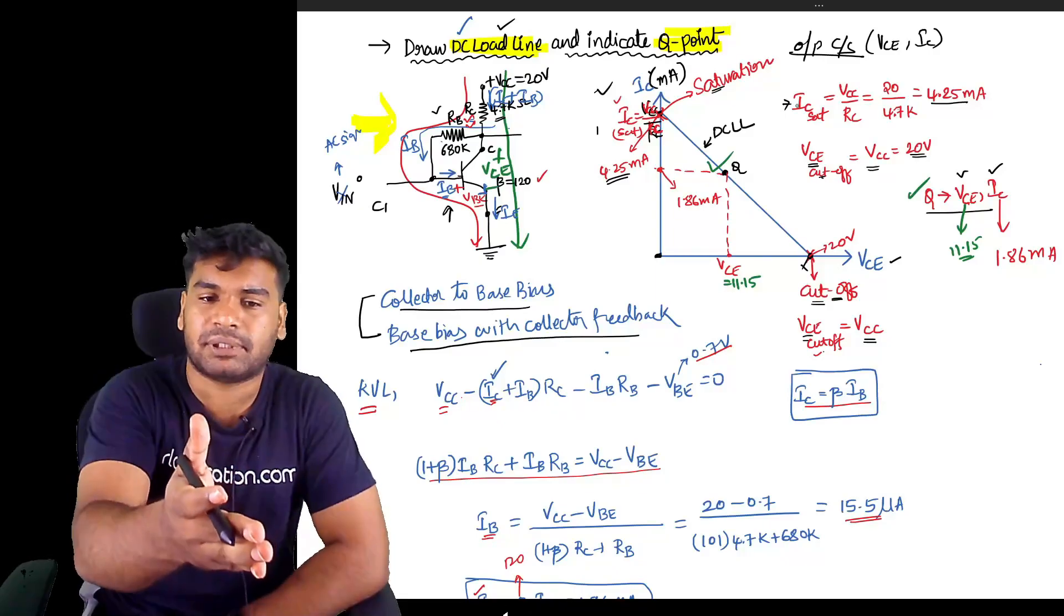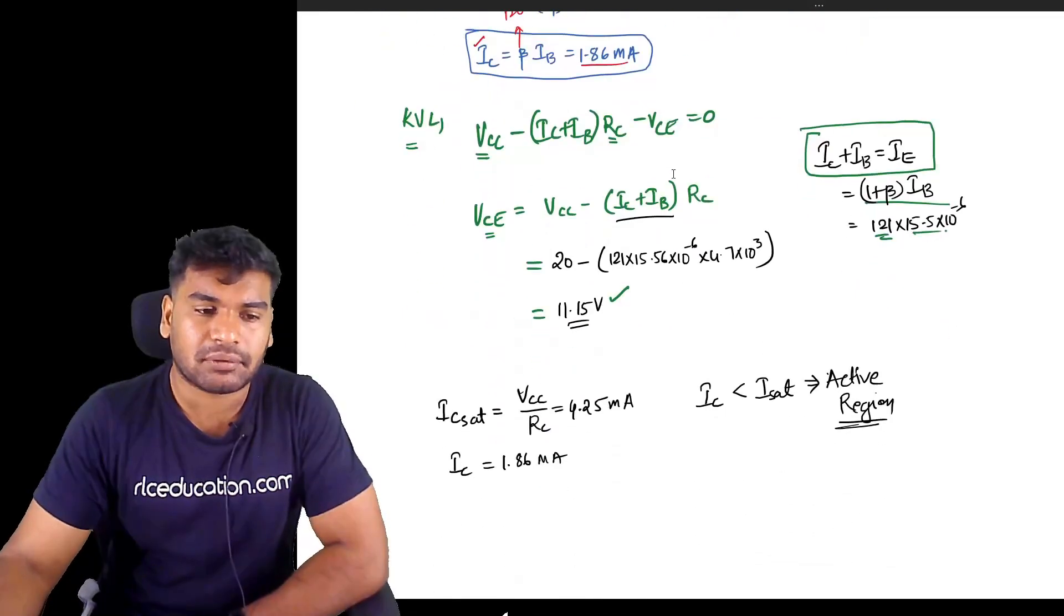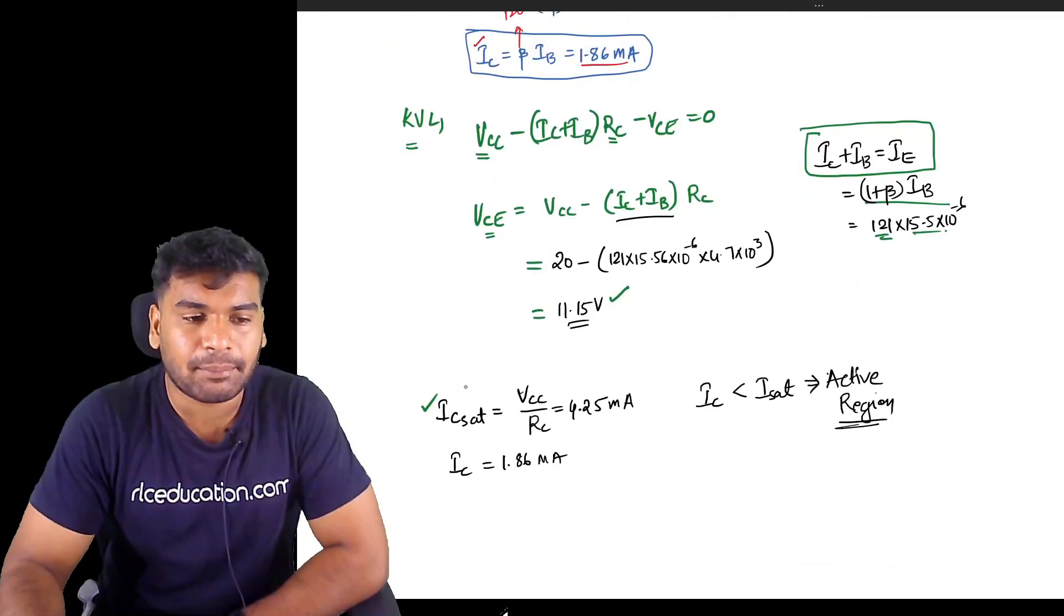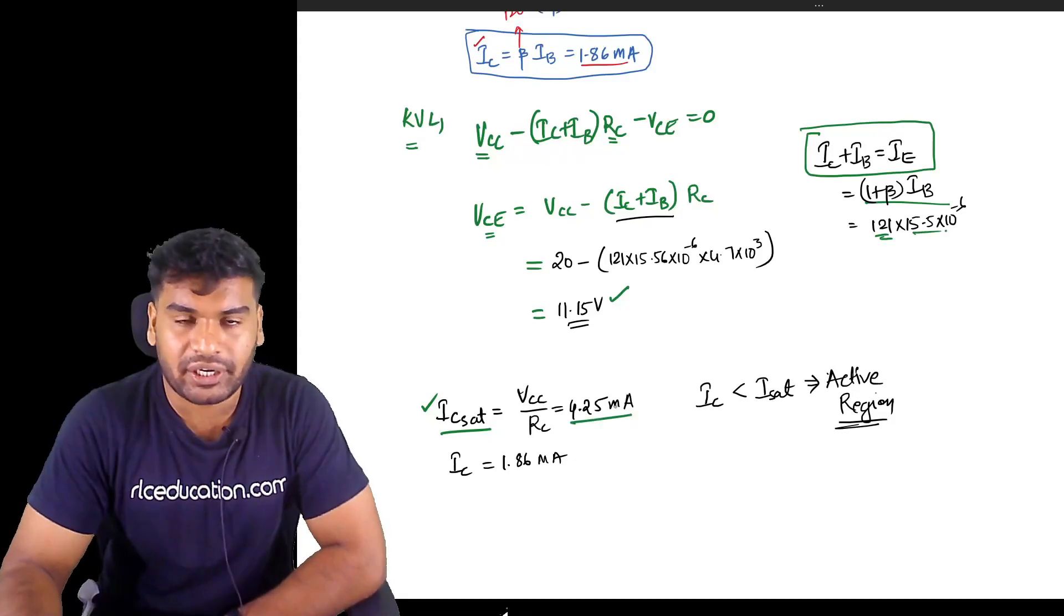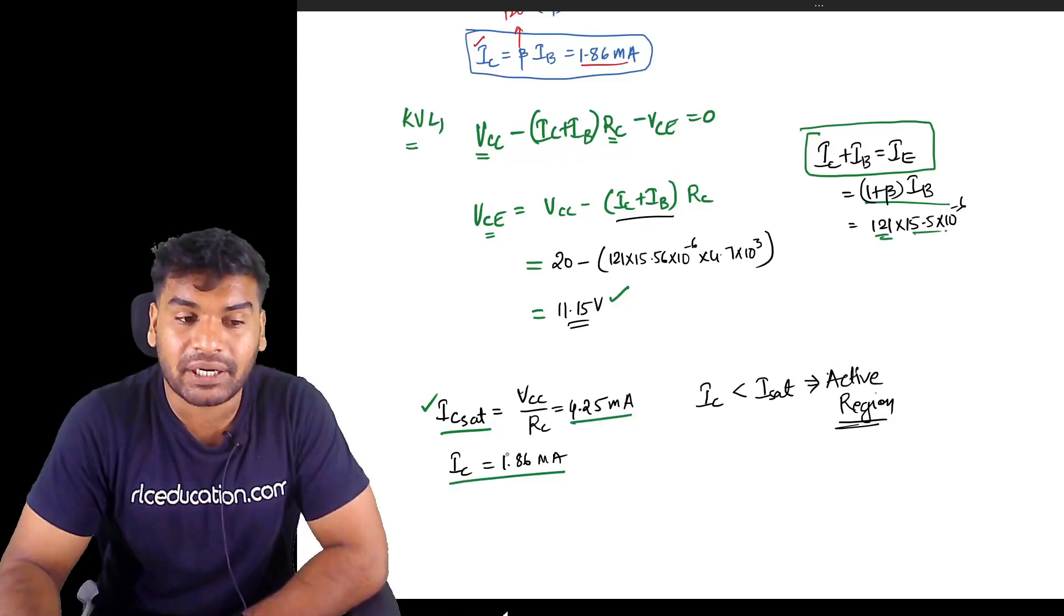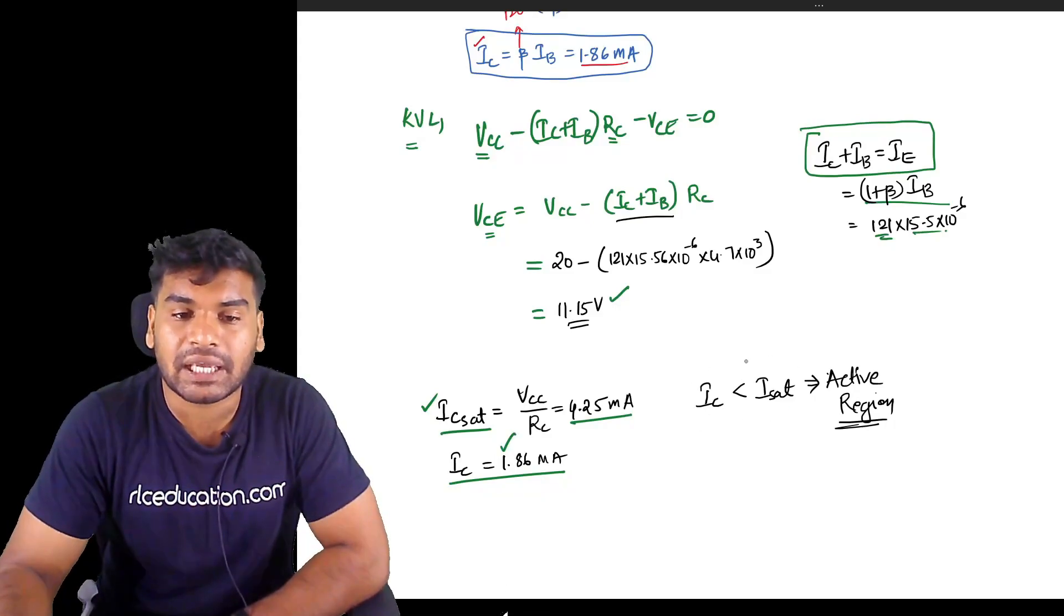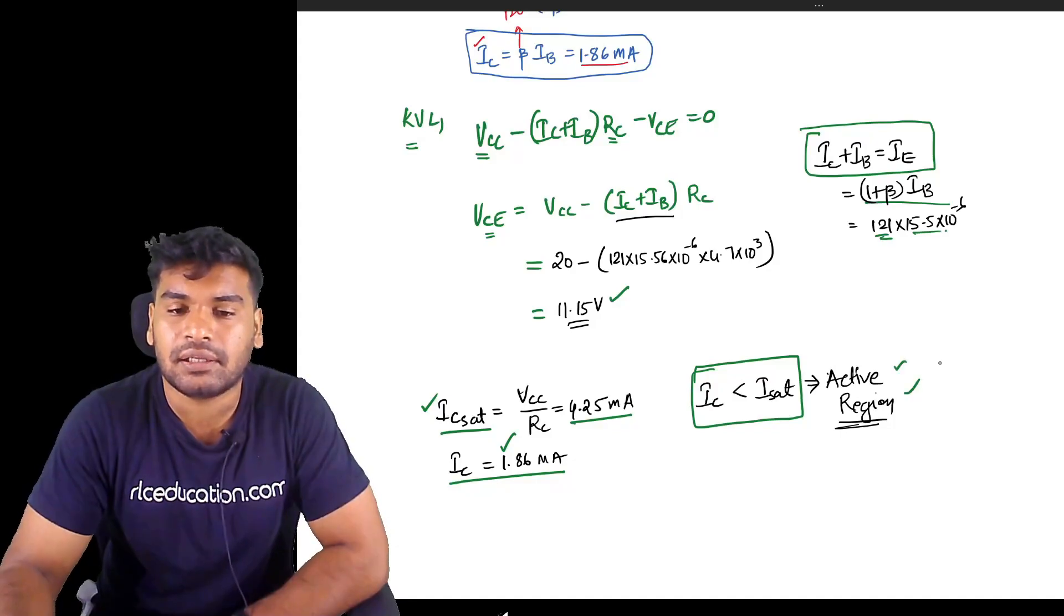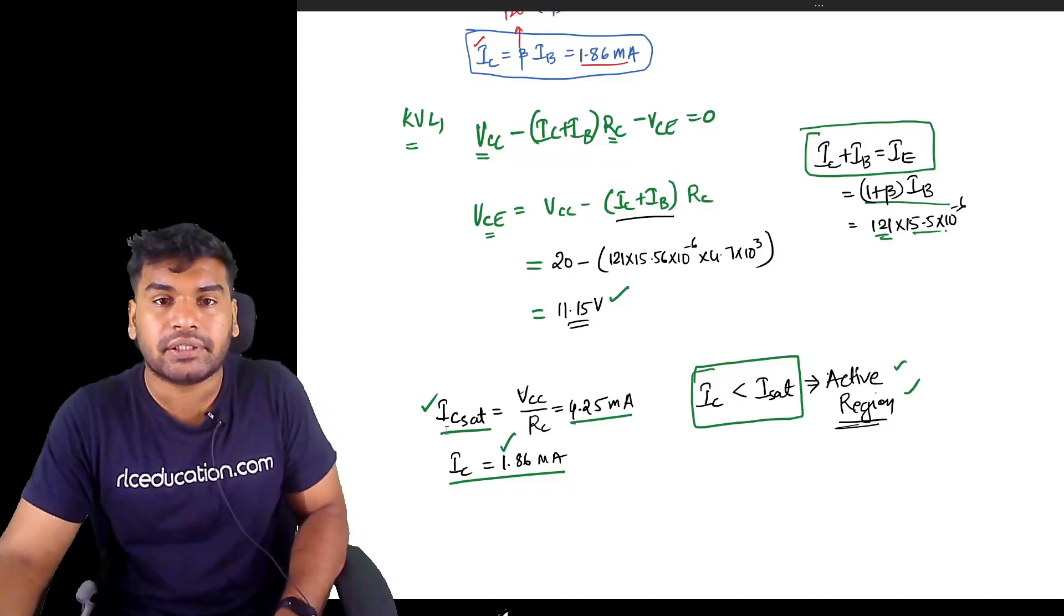Obviously you can find out if it's on the DC load line in the center, almost approximately at the center, it is at active mode only. But mathematically, how to prove it? You know IC_sat equals 4.25, we already found that. What is the present operating IC? 1.86 milliamperes. So when present operating IC is less than IC_sat, then it is at active region. Mathematically also you can prove this. That's it, thank you for watching.